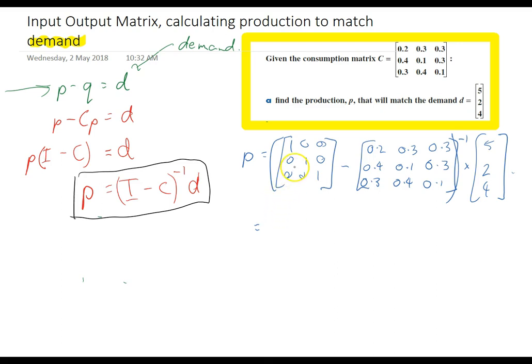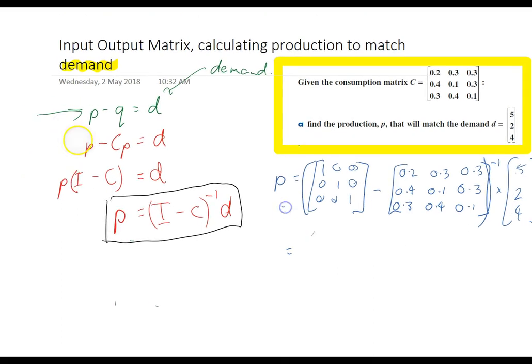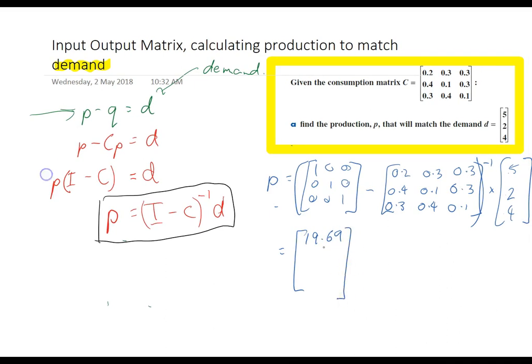Alright, so in order to have enough production to have enough surplus to meet the external demands of 5, 2, 4 we need to produce 19.69 of energy, 17.19 of raw materials and 18.65 of manufactured goods.